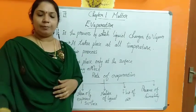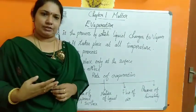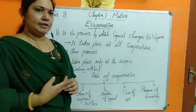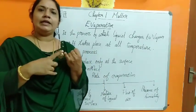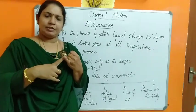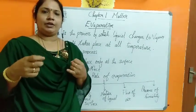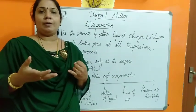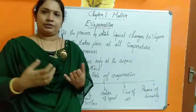Now the last topic from this chapter is the applications of evaporation — we have four. The first one is that we often pour tea into a saucer. By pouring hot tea into the saucer, the rate of evaporation will be more and the tea will get cooled faster.